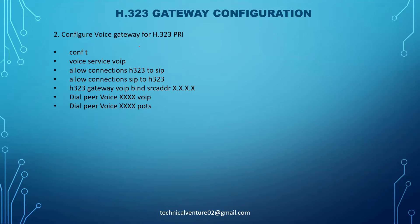In this lecture I'm going to discuss the configuration of a voice gateway for H323 PRI. First, you need to go to the router and put the command 'config t' - that is configuration terminal - to enter configuration terminal mode. Then you need to enter voice services VoIP mode using the 'voice services voip' command.